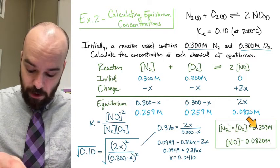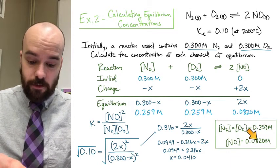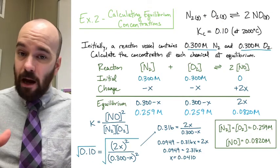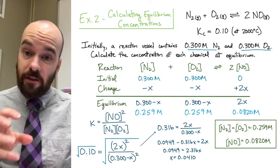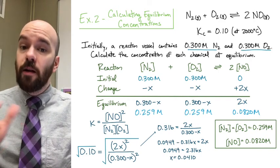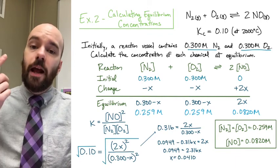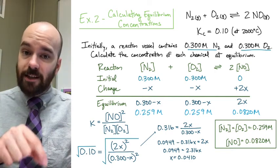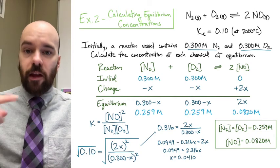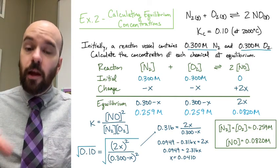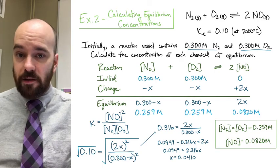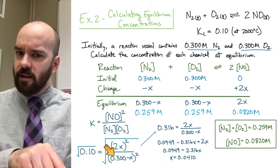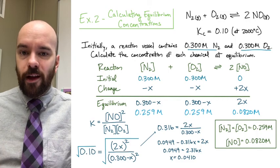At equilibrium we have quite a bit more nitrogen and oxygen than nitrogen monoxide, which makes sense because K equals 0.1 is less than one — the reaction favors the reactants. These problems are all a little bit different, but always start with an ICE table and your K expression. You won't fill in the ICE table in the same order each time; think logically through where each value goes. When you're ready to see the small-X approximation for problems where you end up with a quadratic, check out my next video. Thanks.